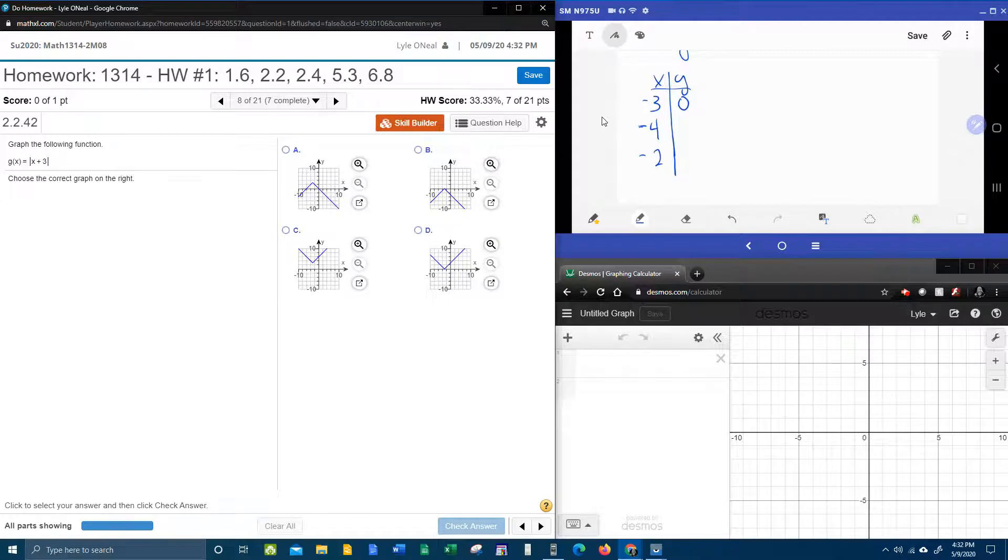So negative four is one unit below negative three, and negative two is one unit above negative three. And we're going to plug those into our function and see what we get.